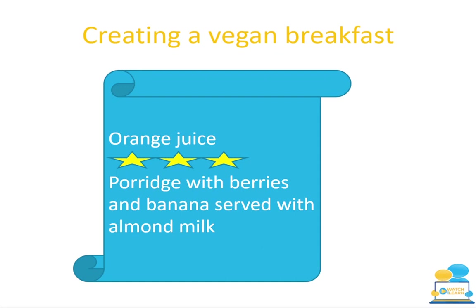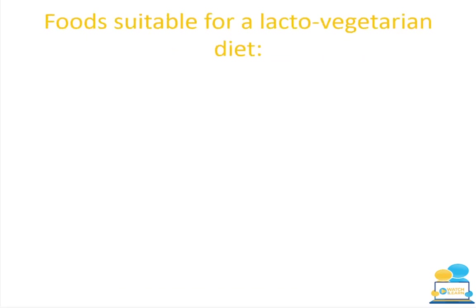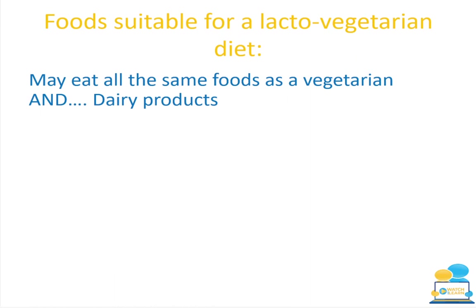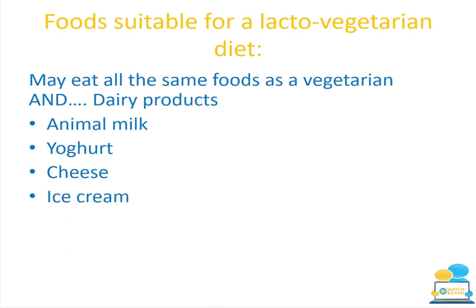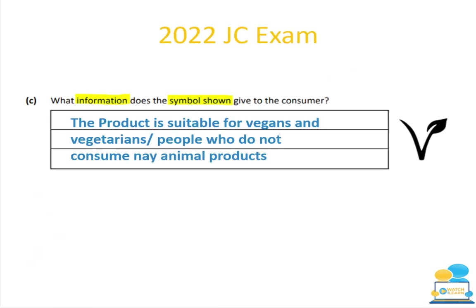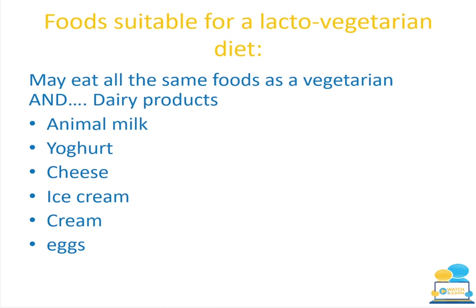You need to be able to do this for all special diets. For a lacto-vegetarian diet, remembering that 'lacto' comes from 'lactose' — the sugar naturally present in dairy products such as milk, yogurt and cheese — they eat all the same foods as a vegetarian, plus dairy products: animal milk, yogurt, cheese, ice cream, cream, eggs and custard. You need to distinguish between lacto-vegetarianism, vegetarianism and veganism.